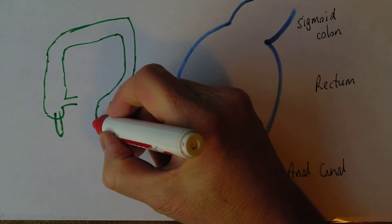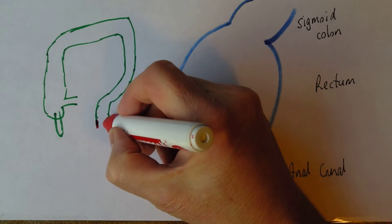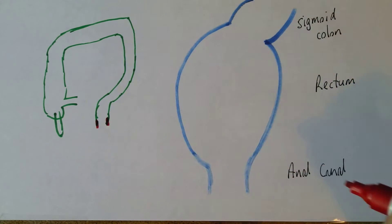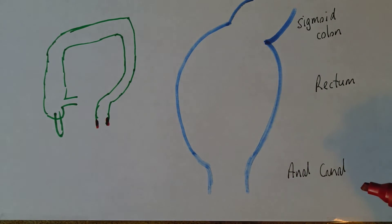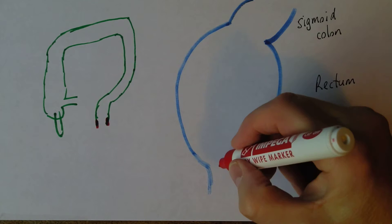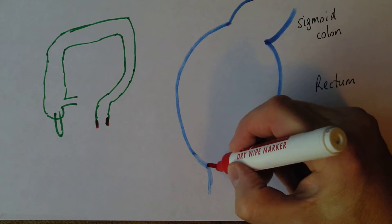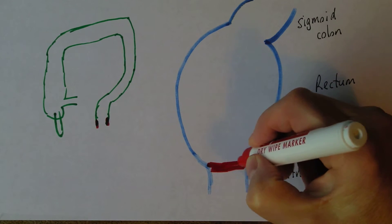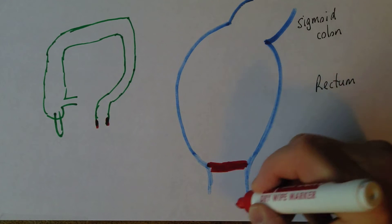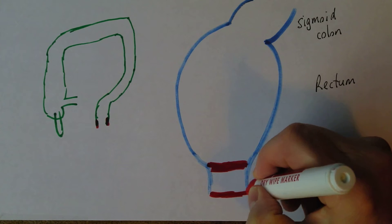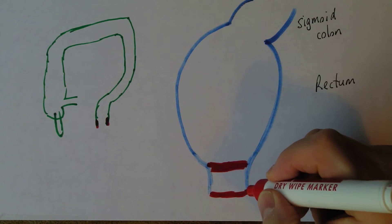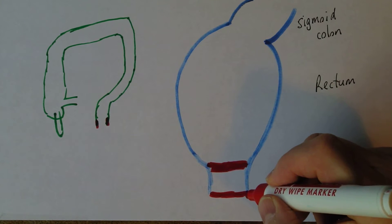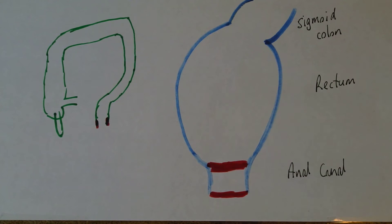This part here is the anal canal. And in the anal canal there are two sphincters: there's an internal sphincter and there's an external sphincter. So the two sphincters of the anal canal.